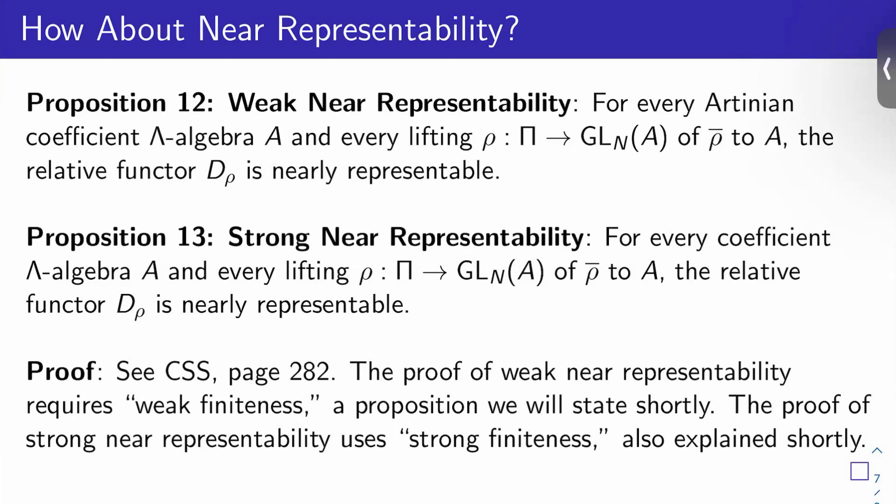So proposition 12 is weak near representability: for every Artinian coefficient lambda algebra A and every lifting rho from pi to GLN of A of rho bar to A, the relative functor D sub rho is nearly representable.